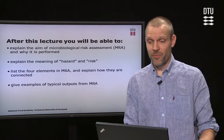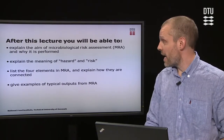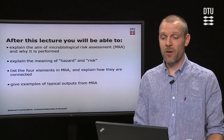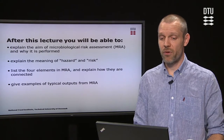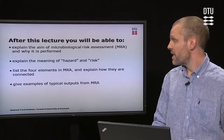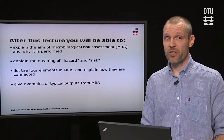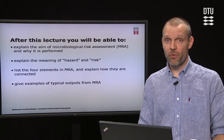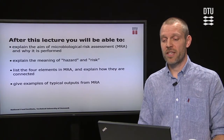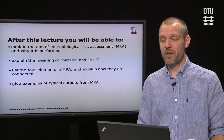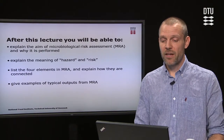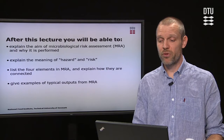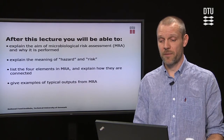After this lecture, you will be able to explain the aim of microbiological risk assessment and why it is performed. You will be able to explain the meaning of the words hazard and risk. You will be able to list the four elements of microbiological risk assessment and explain how they are connected. And finally, you will be able to give examples of typical outputs from microbiological risk assessment.